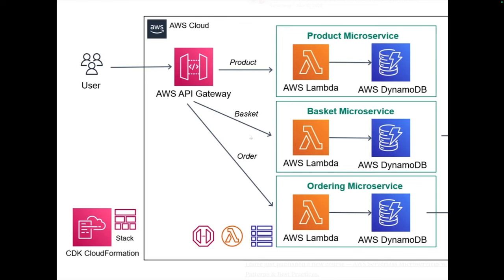Every service is accessing DynamoDB, and these Lambdas are being invoked through API Gateway. You can have an individual API Gateway for each Lambda — these Lambdas acting as microservices: product microservice, basket microservice, ordering microservice. Either you can have a different API Gateway pointing to different Lambdas, or you can have a proxy mapping from a single API Gateway where all product calls go to the product Lambda, basket calls go to the basket microservice, and order-related path-based calls go to the ordering microservice.